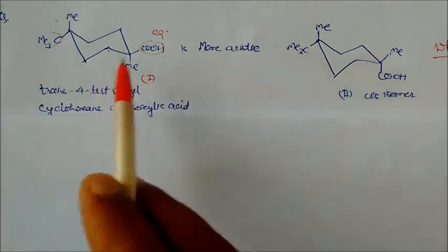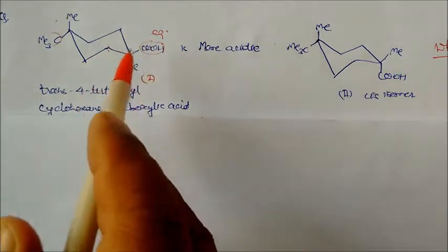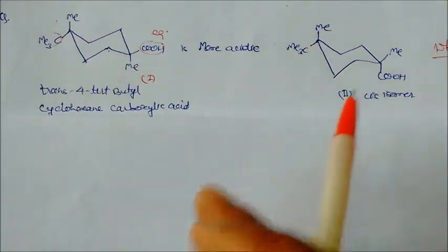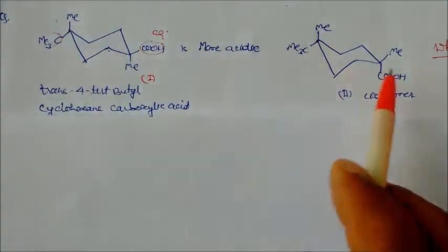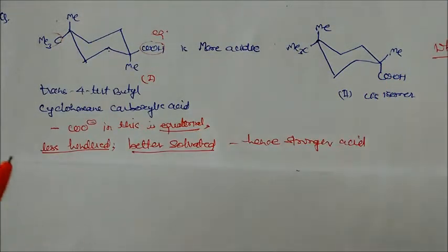This is more acidic for this reason: because it's more stable, the two groups are axial to each other. This is less stable because these two groups are the same size. Here, the carboxylic acid is in the equatorial position.